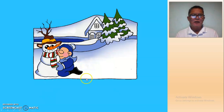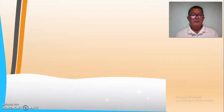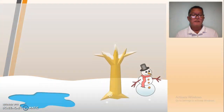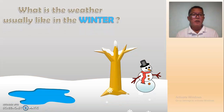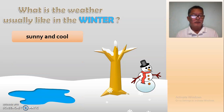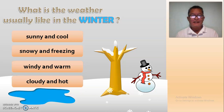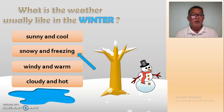And the next one — what season is this? Look, what season is it? Winter! What is the weather usually like in winter? Sunny and cold? Snowy and freezing? Windy and warm? Or cloudy and hot? The answer is snowy and freezing — it's cold.